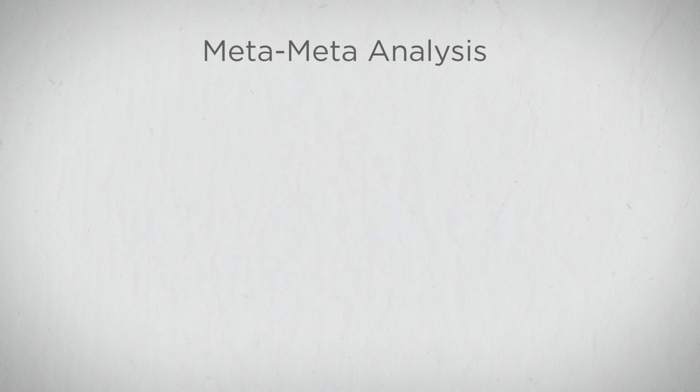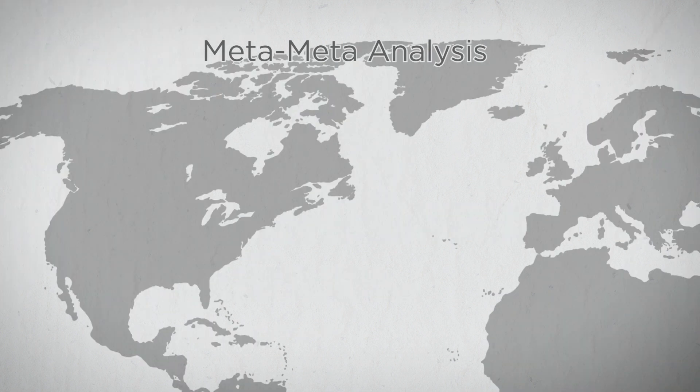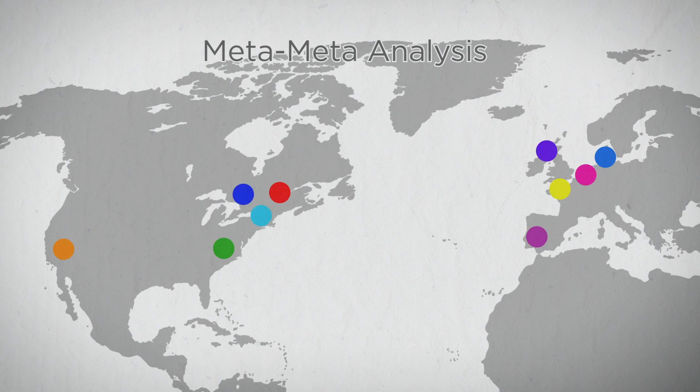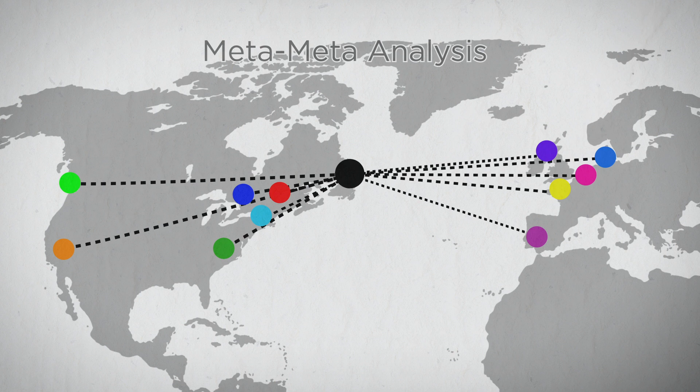What is a meta-meta-analysis? They collected data from several published meta-analyses that measure differences between autistic people and the typical population and combined them.